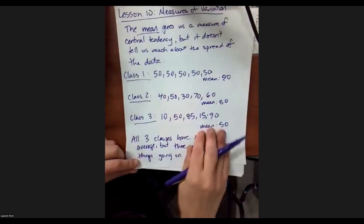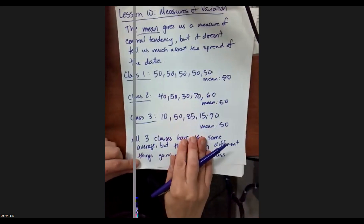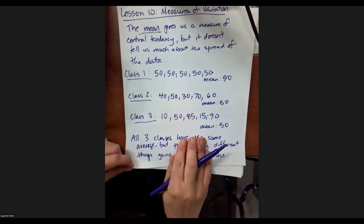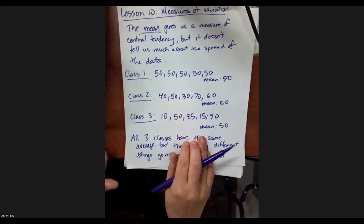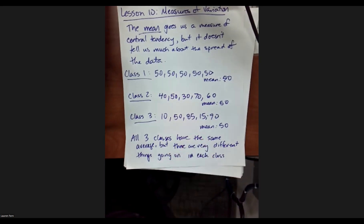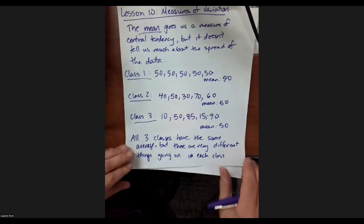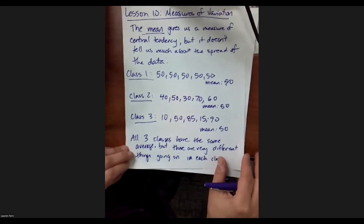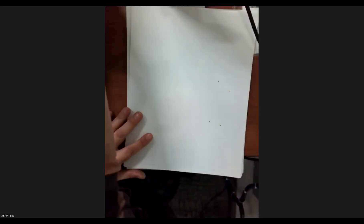Is there a way to look at how spread out our data is in order to then be able to tell whether our mean is pretty indicative of what happened or it is not? So we're going to talk about measures of variation.